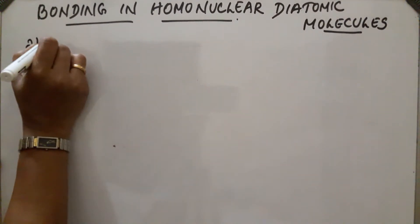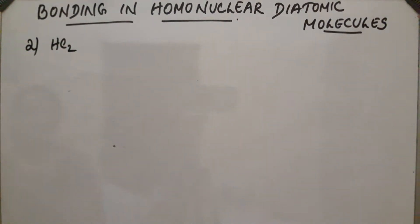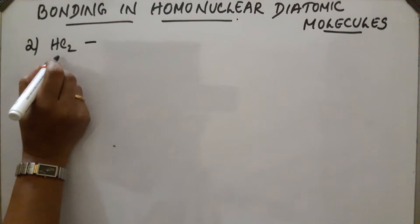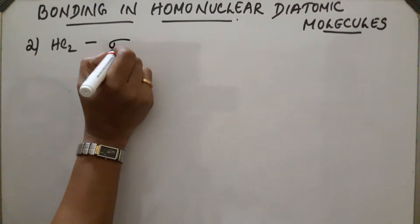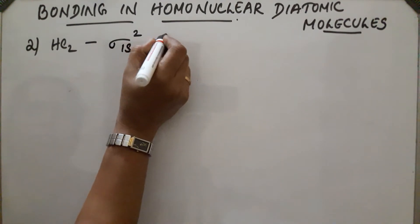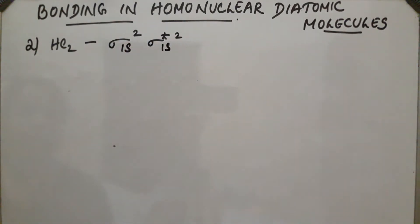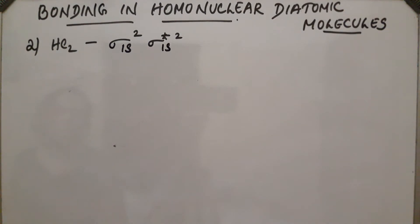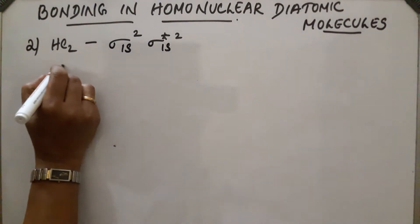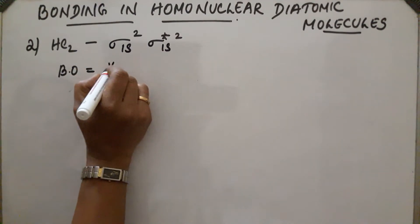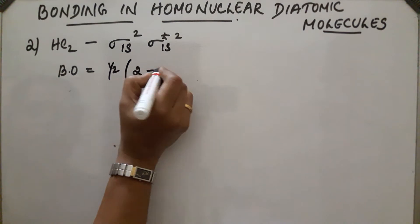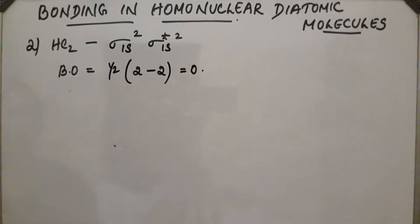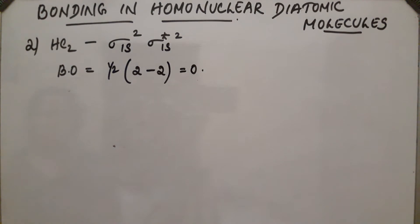The second molecule is the helium molecule, He₂. This is a hypothetical case — we need to determine whether the He₂ molecule exists or not. Each helium atom contains two electrons, so the electronic configuration will be sigma 1s² sigma star 1s². Both bonding and antibonding molecular orbitals are filled. Bond order equals 1/2 into (2 minus 2) = 0. Bond order 0 means the molecule is unstable and He₂ does not exist.